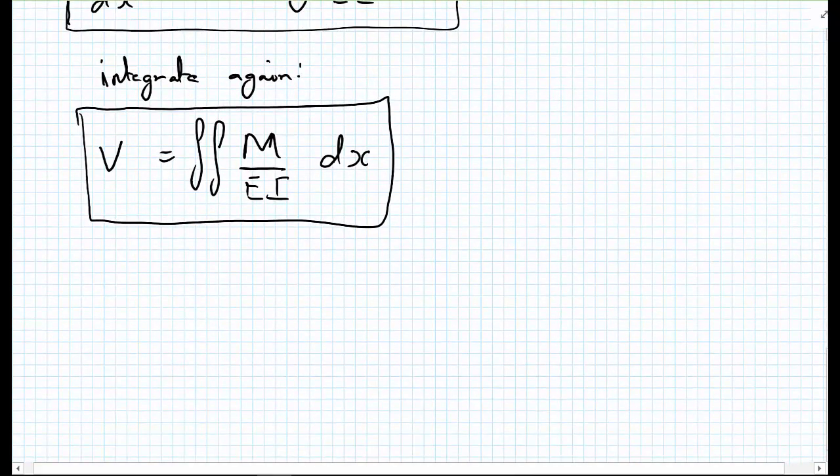And it's worth pointing out as well that V could be a function of x, M could be a function of x. So could E, so could I. But we're not going to consider variations of E and I with x in this course.